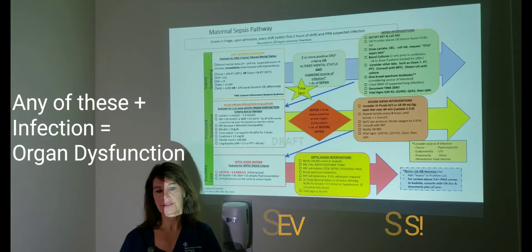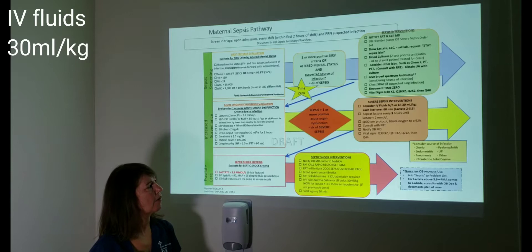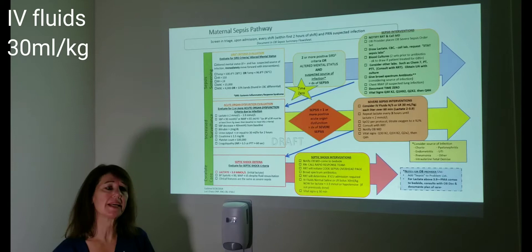And we're going to want to move on to maybe consider doing fluid bolus. Consider IV fluids giving a 30 mL per kg or you could give one to two liters, whatever the physician wants to do. But we would want to get fluids at that point. If the lactate is above two, we're going to want to trend the lactate and do it every three hours until the lactate is less than two.